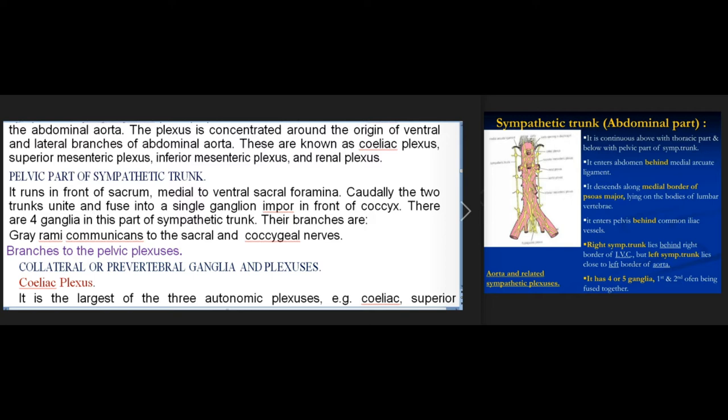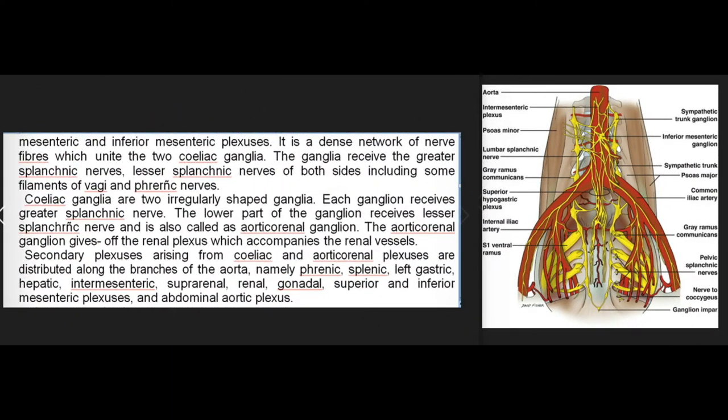Collateral or prevertebral ganglia and plexus. Coeliac plexus: it is the largest of the three autonomic plexuses (coeliac, superior mesenteric, and inferior mesenteric). It is a dense network of nerve fibers uniting the two coeliac ganglia. The ganglia receive the greater splanchnic nerves, lesser splanchnic nerves of both sides, including some filaments of the vagus nerves. Each ganglion receives the greater splanchnic nerve; the lower part also receives the lesser splanchnic nerve and is called the aorticorenal ganglion, which gives off the renal plexus accompanying the renal vessels.